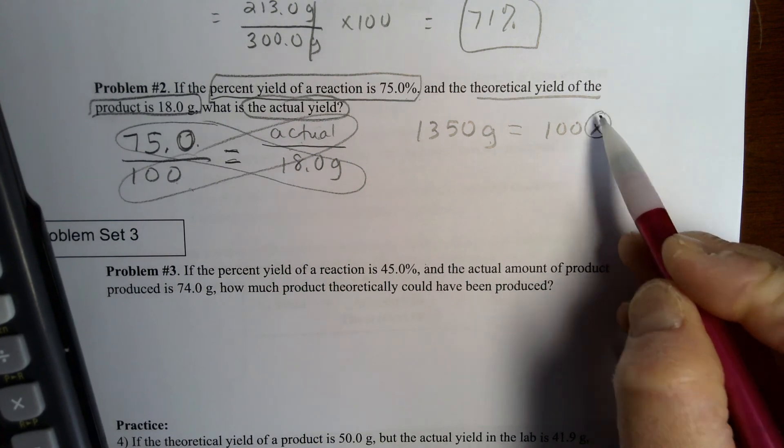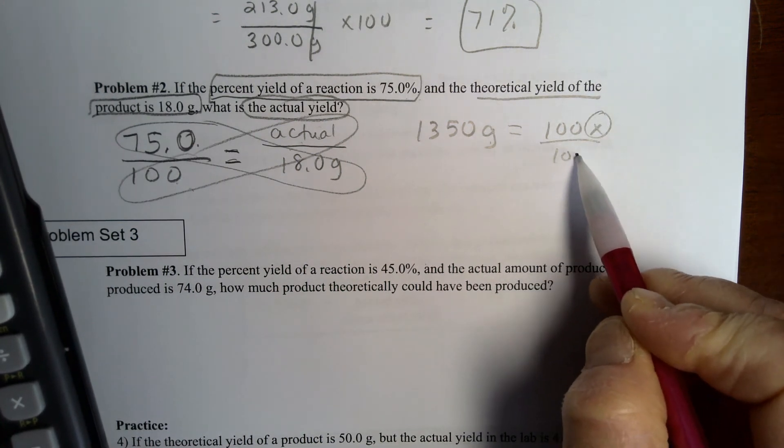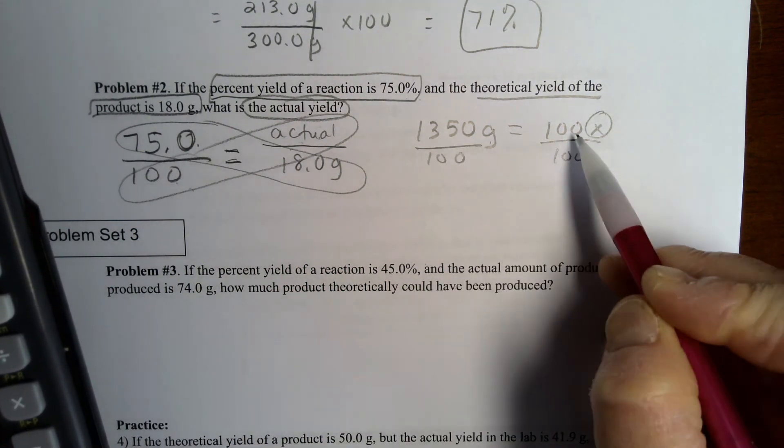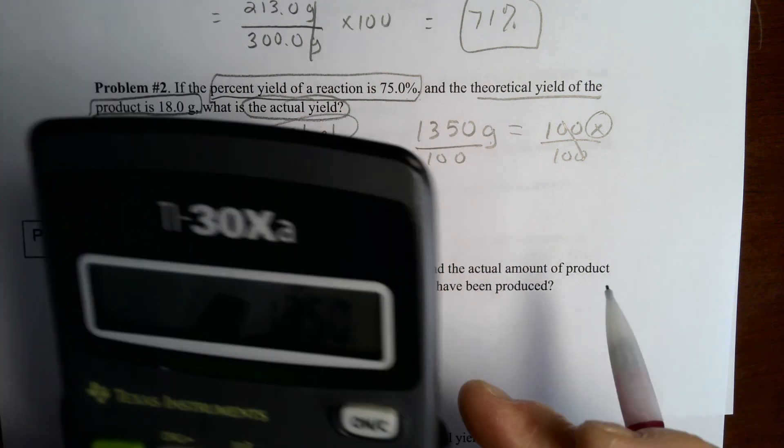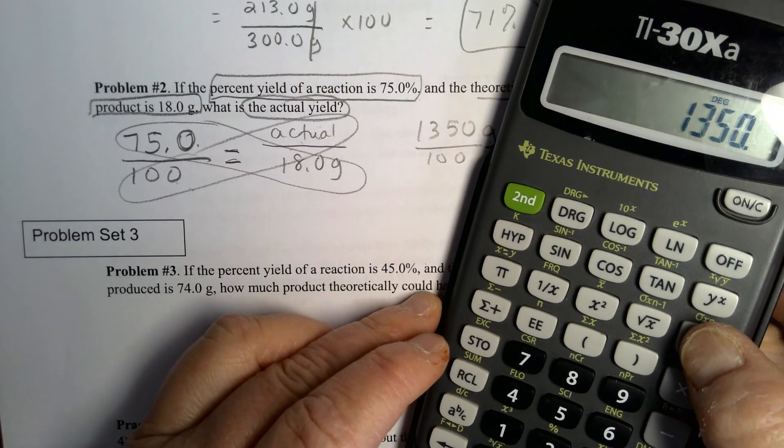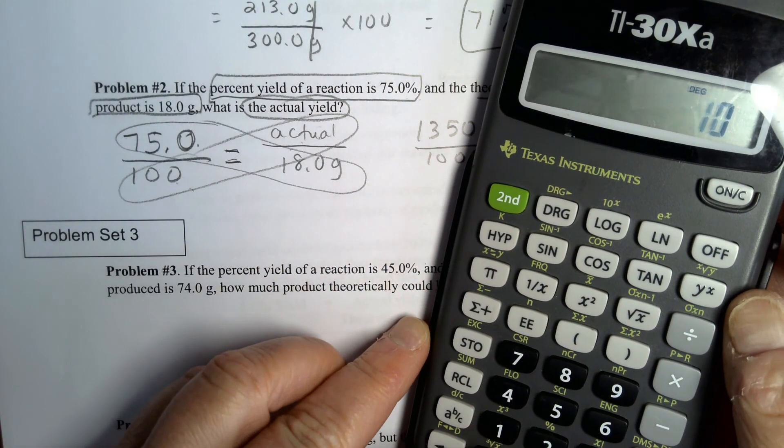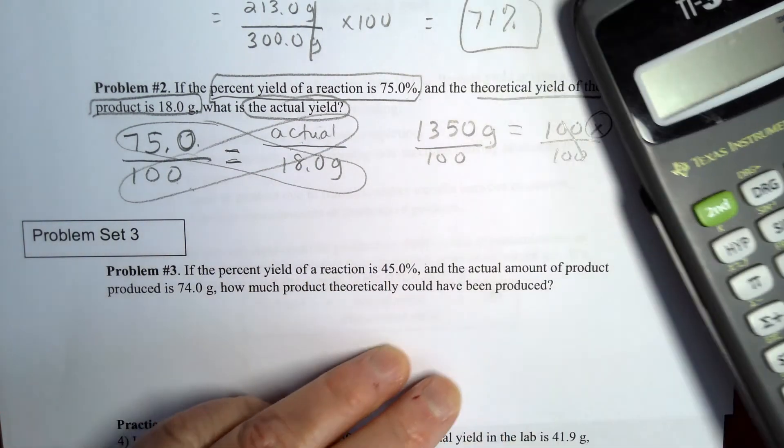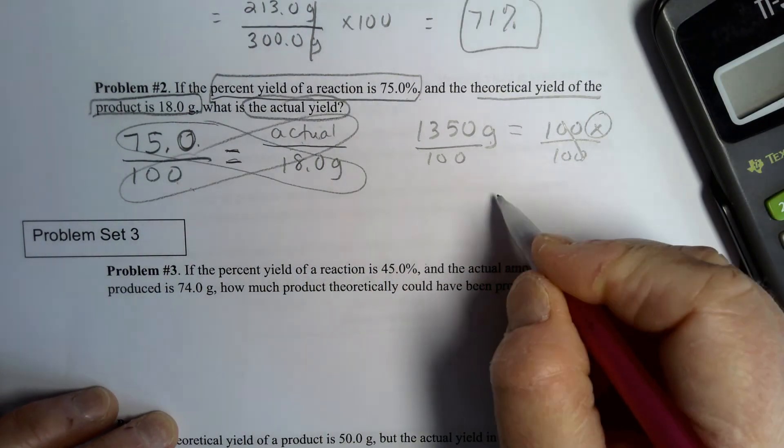Solving for x, we need to divide by 100. And so 1350, let's divide that by 100, and we're going to get 13.5. So here, 13.5 grams is our actual yield.